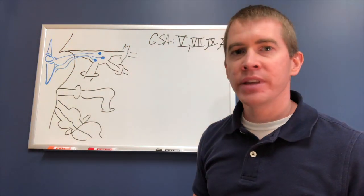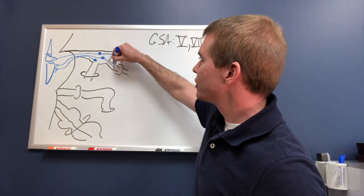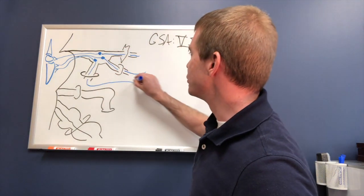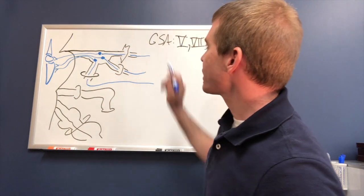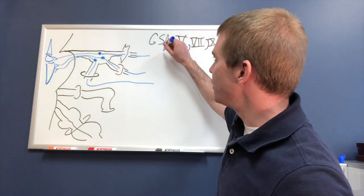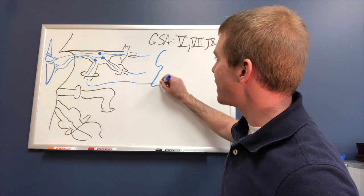Now, peripherally, these travel out through their given foramen to travel to the different parts of the body to form those dermatomal patterns. Of course, each one synapses in a different region of the face.